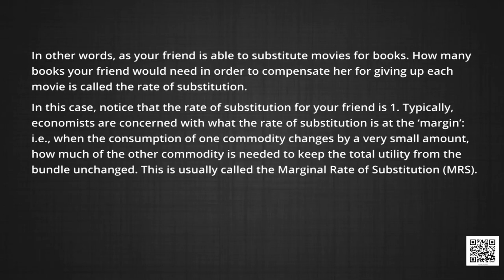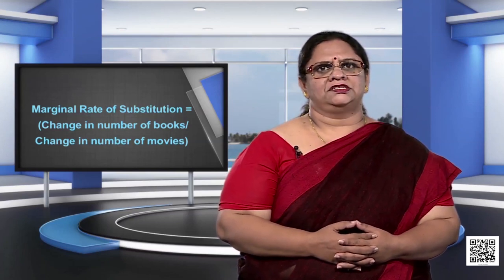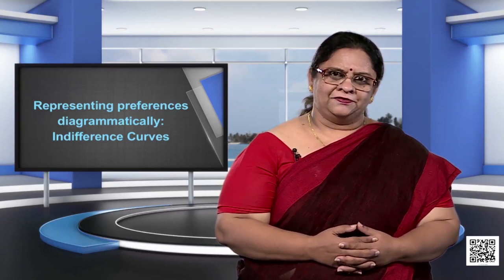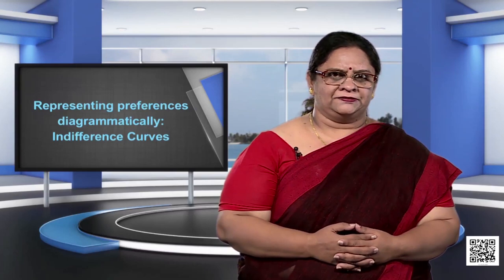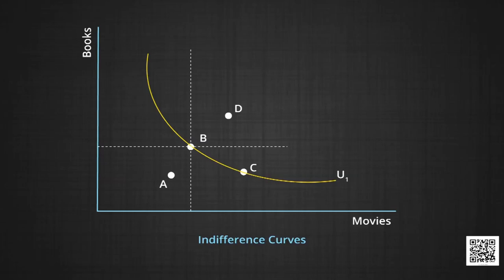Typically, economists are concerned with what the rate of substitution is at the margin — that is, when the consumption of one commodity changes by a very small amount, how much of the other commodity is needed to keep the total utility of the bundle unchanged. This is called the marginal rate of substitution. The marginal rate of substitution is defined as the change in the number of books divided by the change in the number of movies. Now, how can we represent these preferences diagrammatically? Consider the diagram on your virtual screen. We have represented movies on the x-axis and books on the y-axis. Various points on this diagram, such as A, B, and D, represent bundles of movies and books.